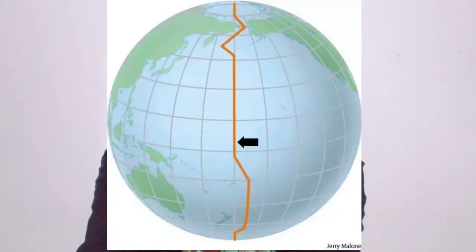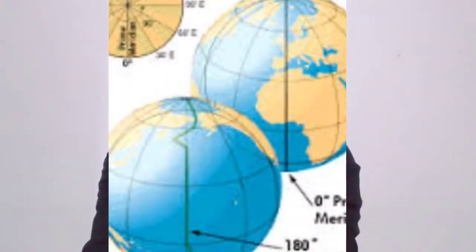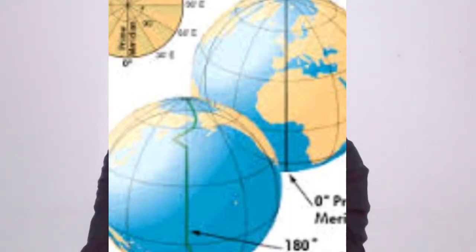India is ahead by 5 hours 30 minutes compared to GMT. The next important meridian is the 180 degree meridian, which is opposite to the zero meridian. The zero meridian is not designated as eastern or western meridian, and similarly, the 180 degree meridian is also not designated as eastern or western.